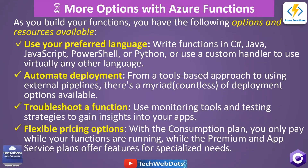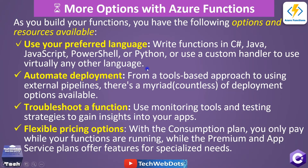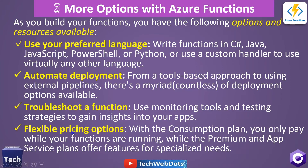As you build your functions, the following options and resources are available. You can use your preferred language — for example, C#, Java, JavaScript, PowerShell, or Python — or use a custom handler to use virtually any other language. Automatic deployment is available from a tool-based approach to using an external pipeline, with many options available. For troubleshooting, you can use monitoring tools such as Application Insights to see what is happening in your function at every moment.